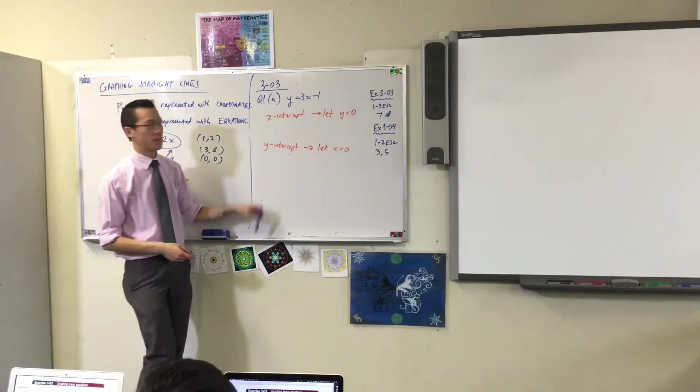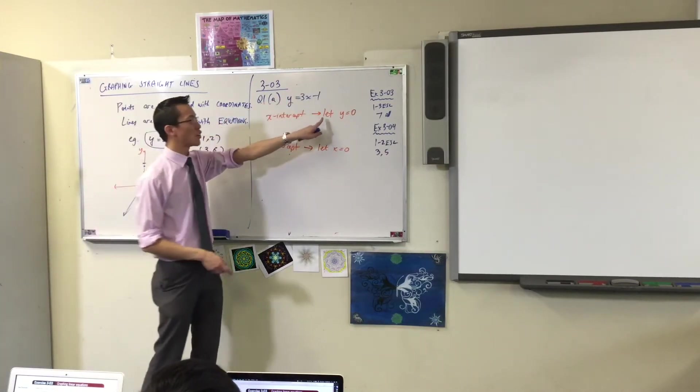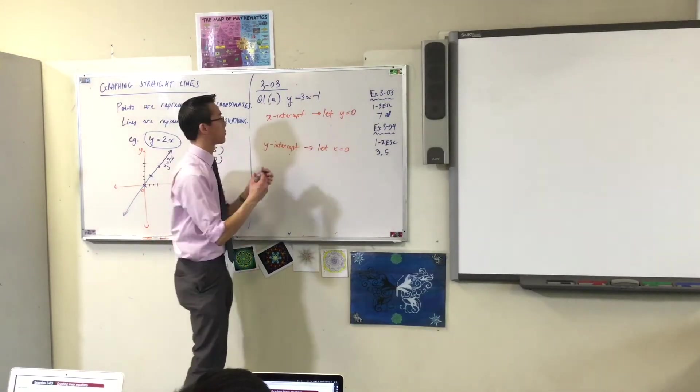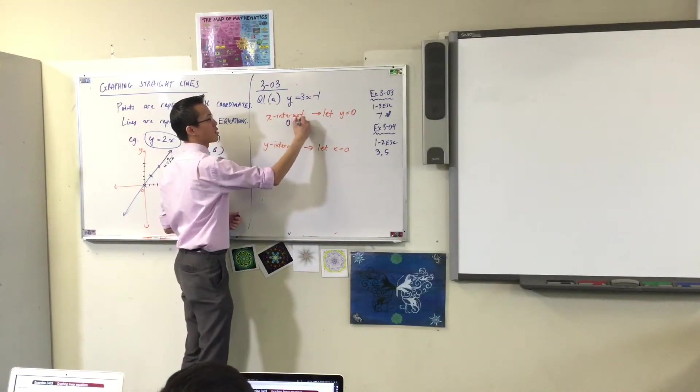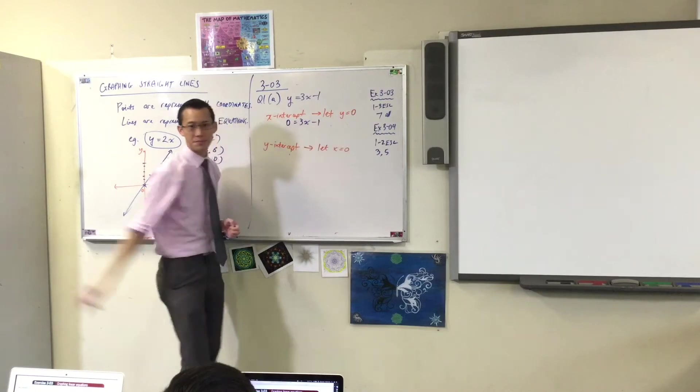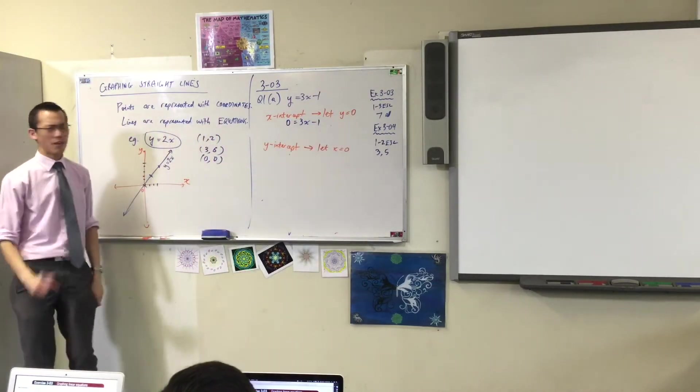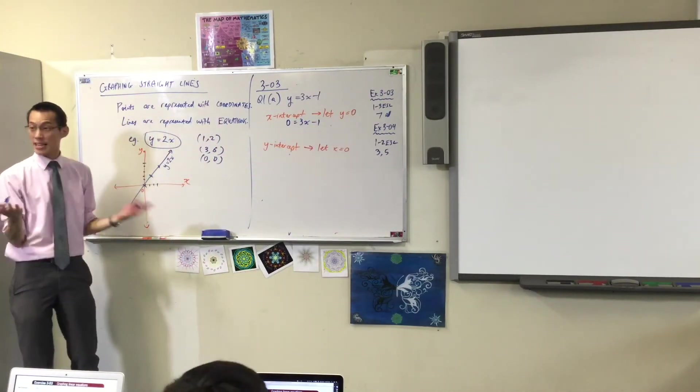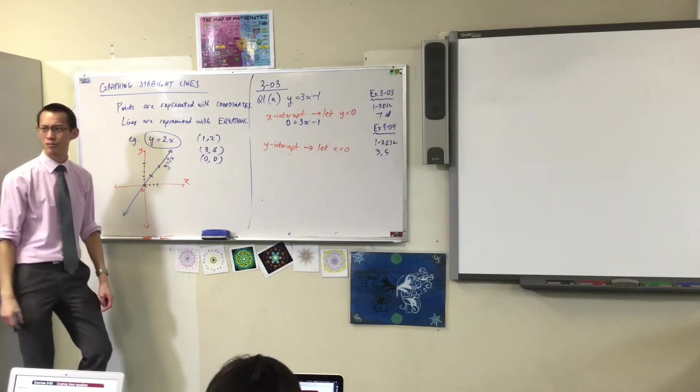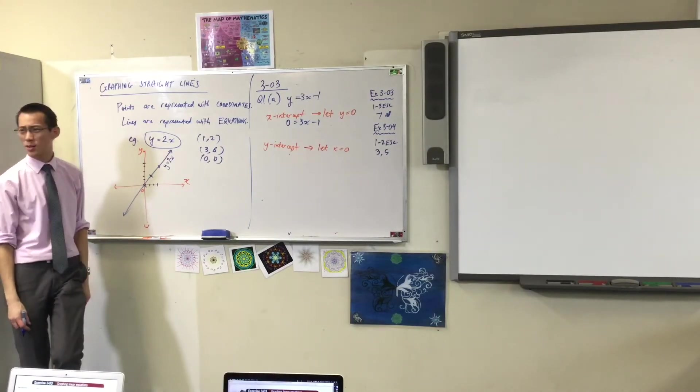Here's the equation. I'm going to let y equal 0. 0 equals 3x minus 1. So now I need to solve for x. That's the x-intercept. Can someone tell me what to do? What can I do to both sides that might help me here?